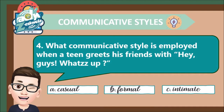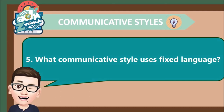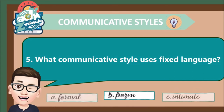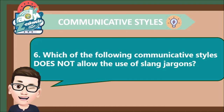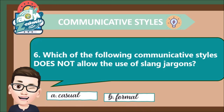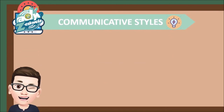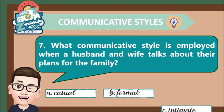Number 5: What communicative style uses fixed language? The correct answer is B. Frozen. Number 7: What communicative style is employed when a husband and wife talk about their plans for the family? The correct answer is C. Intimate.